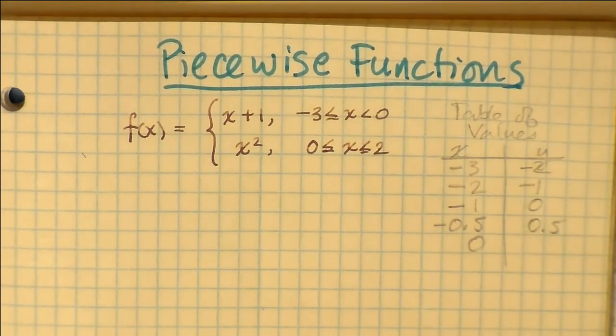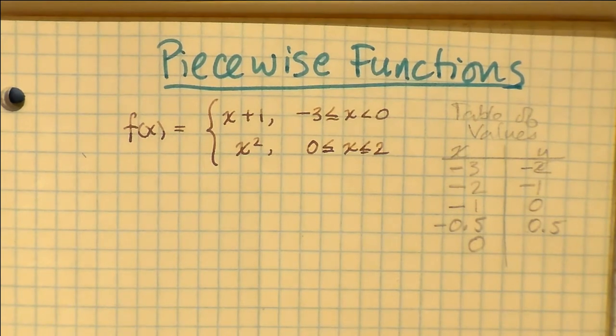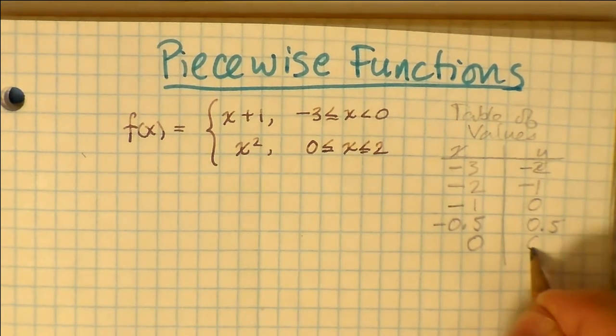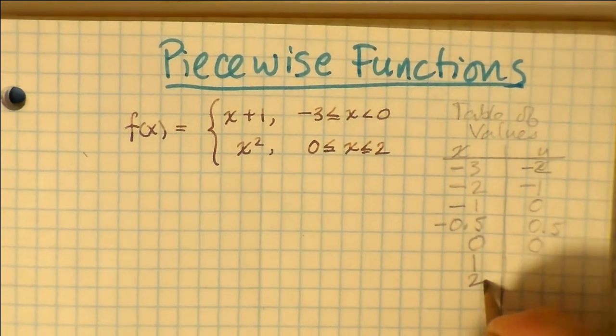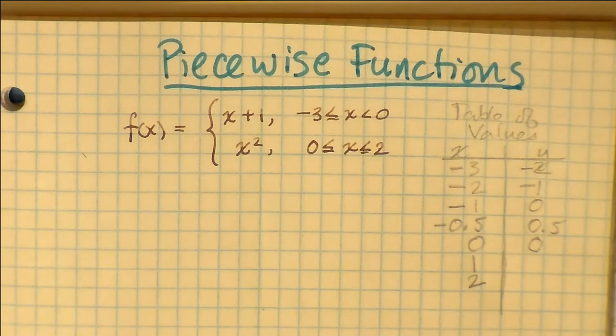And then we have x squared. Well, if I plug in 0, 0 is now part of the domain of x squared if you look at the inequalities that is defined under, and if you plug 0 into x squared, you get 0. If you plug in 1, you get 1. And if you plug in 2, well, 2 squared is 4.